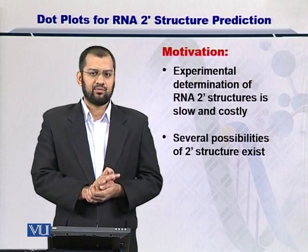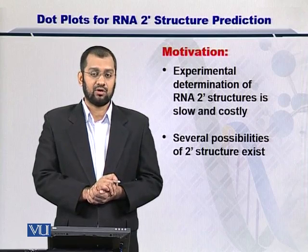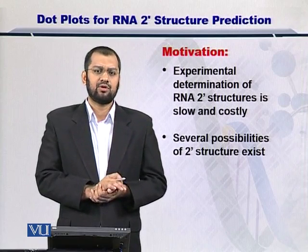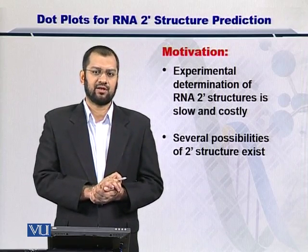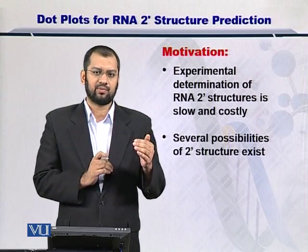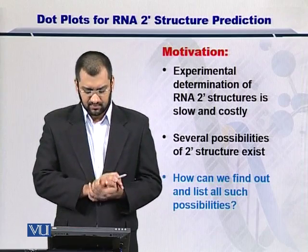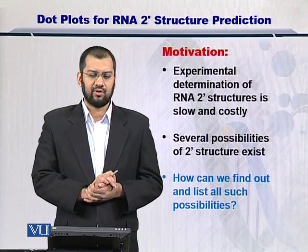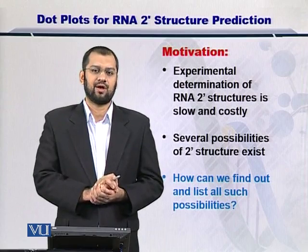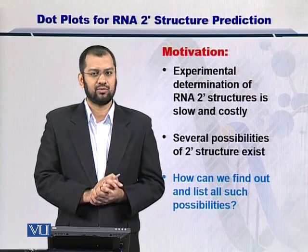Given that we need to predict the secondary structures, the problem is not simple either, because there are too many possibilities that exist. If we were to successfully determine the secondary structure of an RNA molecule, we really need to list down all of the secondary structure possibilities and then select the optimal one. The important question is: how do we list down all such possibilities? We have to find each and every one of them and be able to list them down towards comparing them.